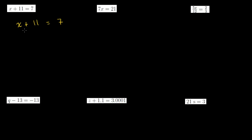When we solve an equation, the goal is to get it in the form x is equal to something. To get there, we want just the x on the left-hand side — we want to get rid of this 11. Now we can't just get rid of it only on the left-hand side. This is an equation: anything you do to one side of the equation, you have to do to the other side.